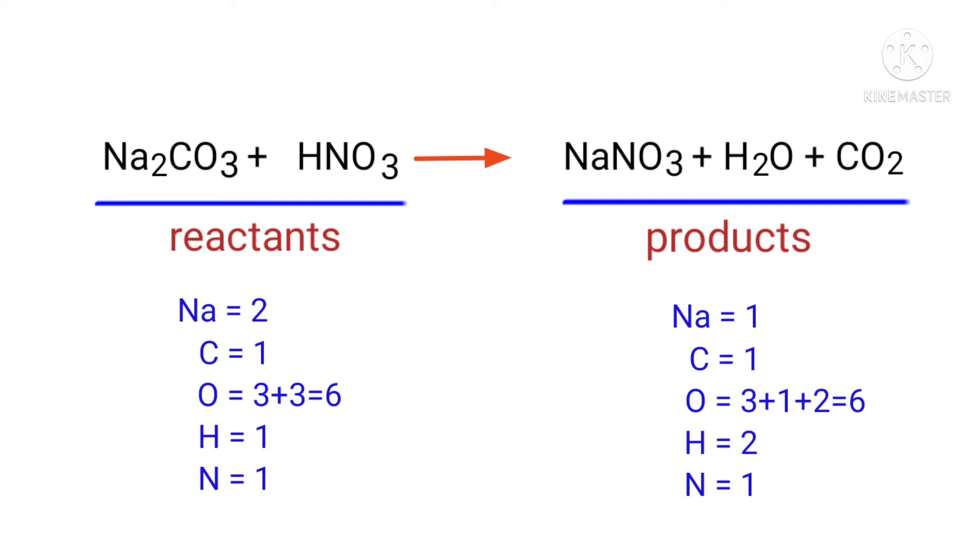In this equation, we need to balance the sodium atoms first. To do this, we need to put a coefficient of two in front of NaNO3. The sodium atoms are now balanced.